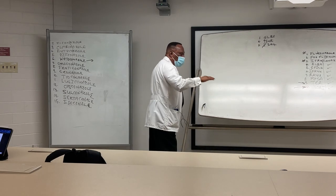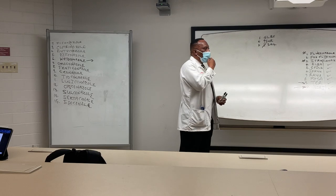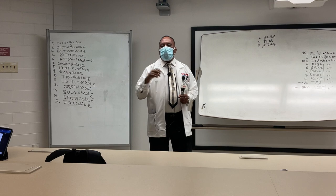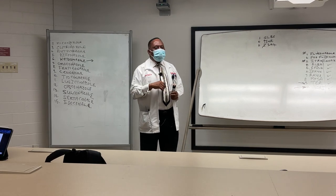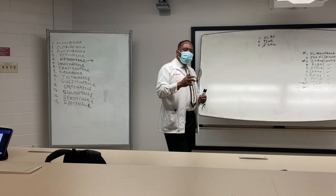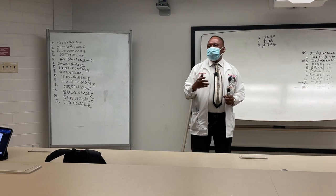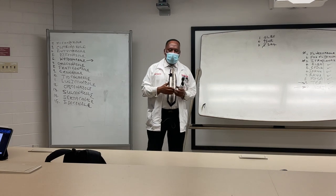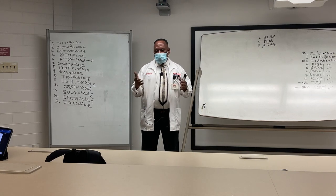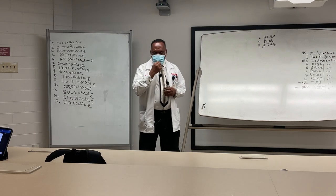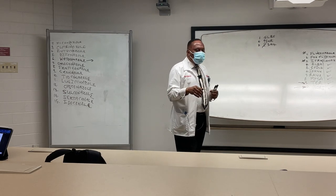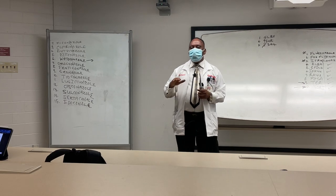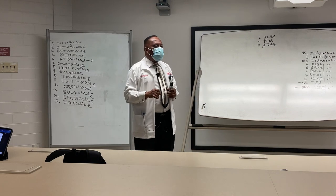Voriconazole should be administered PO or IV. If you give it PO, use 200 mg every 12 hours. It should be administered on an empty stomach because food tends to decrease its absorption.